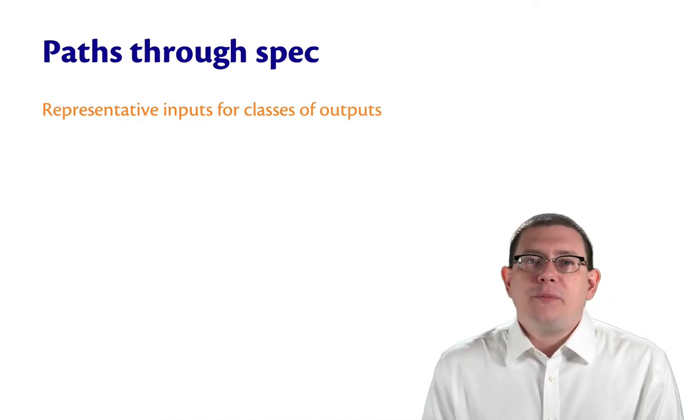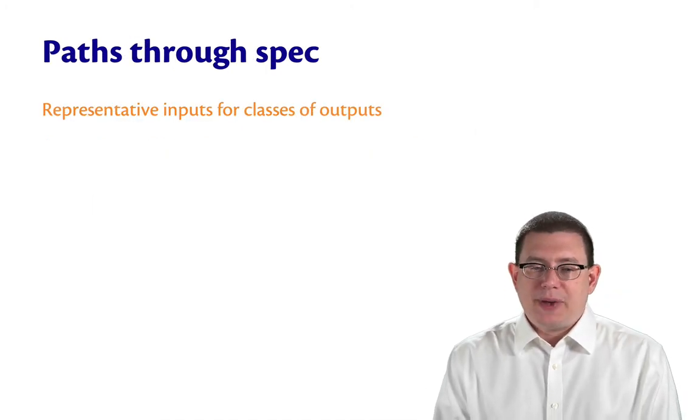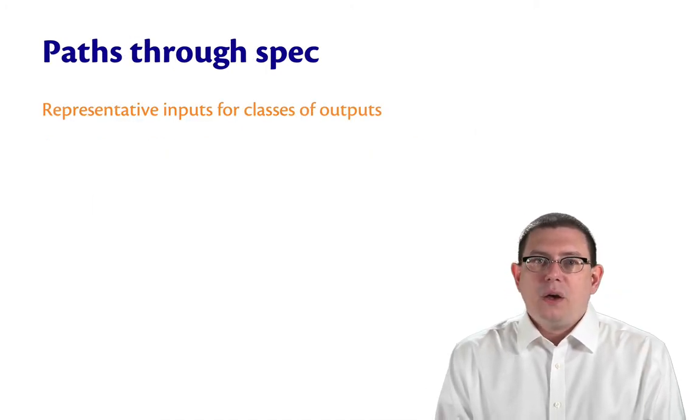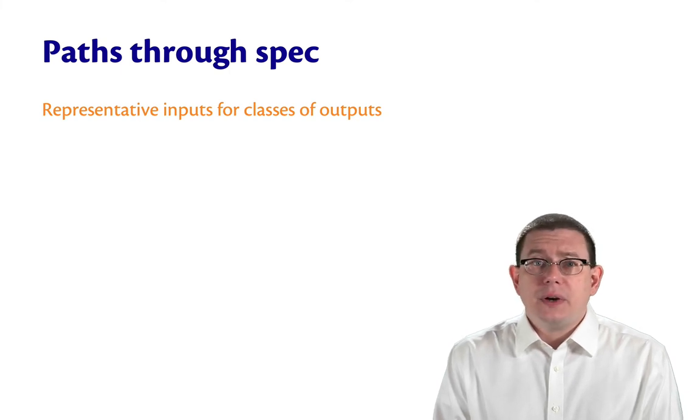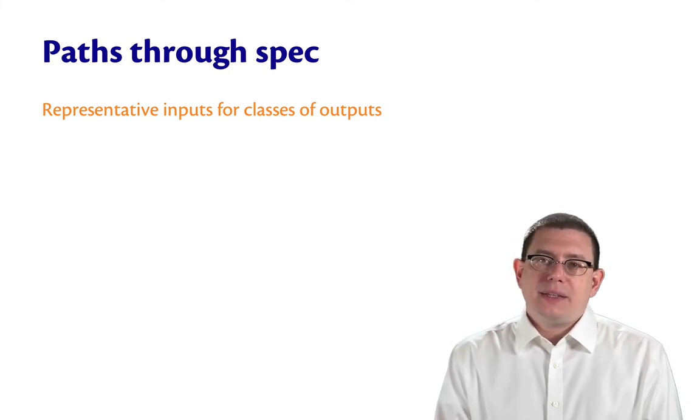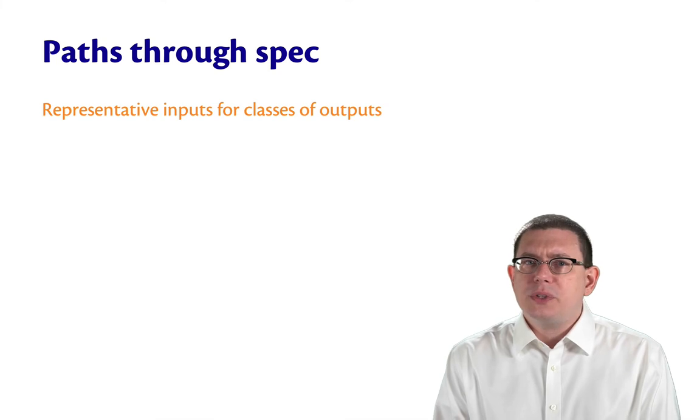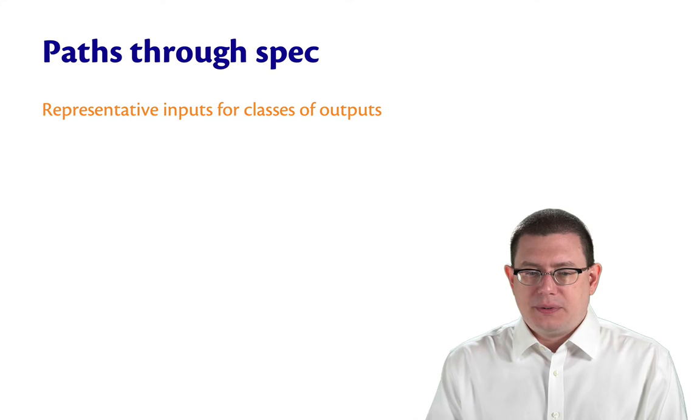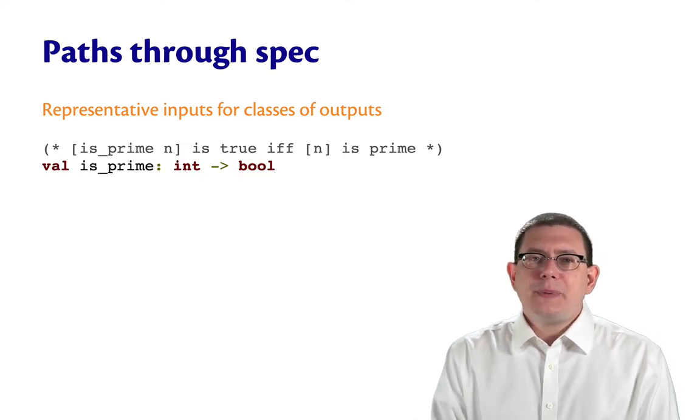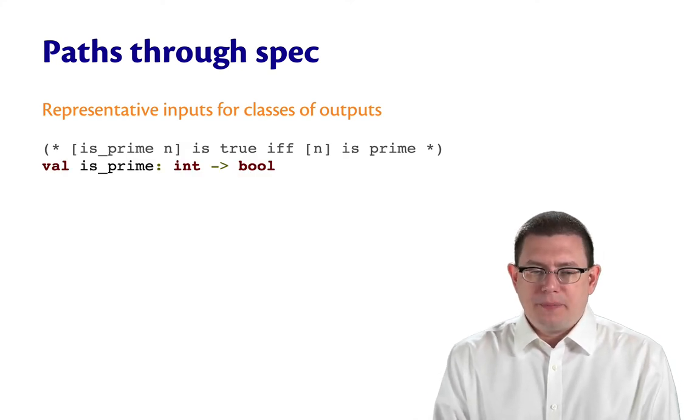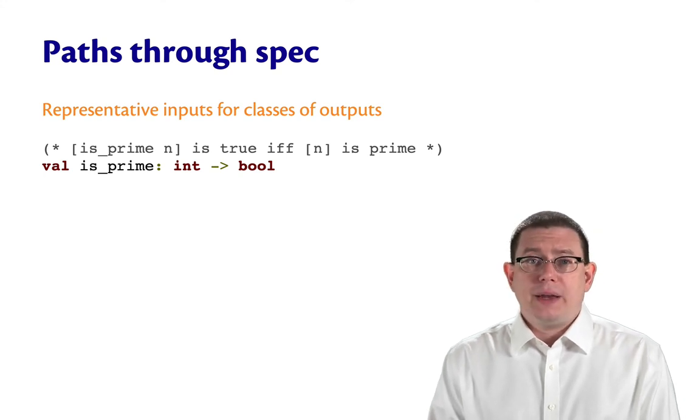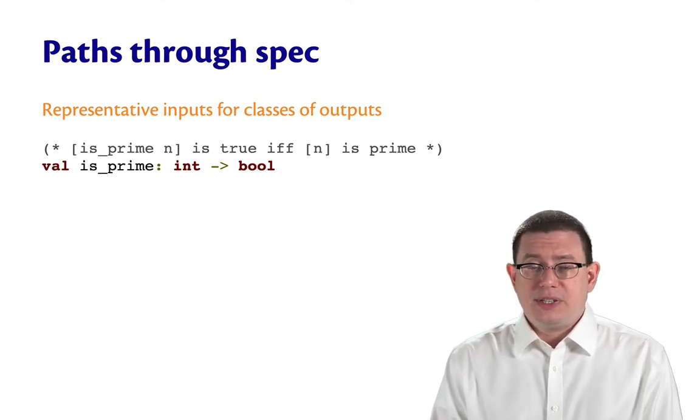The third kind of black box test is a path through a specification. This is maybe a little less familiar. What I mean by this can actually have a few different forms. One of those forms is representative inputs for classes of outputs. Here's a specification for a function is_prime. is_prime n is true if and only if n is prime.